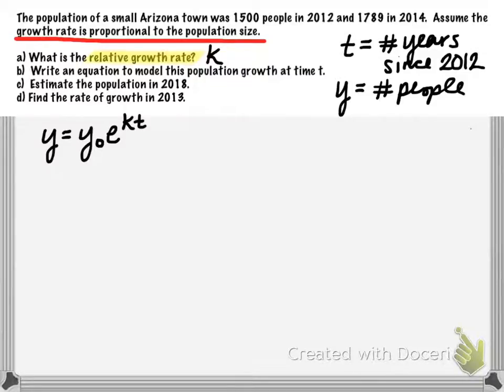I always recommend that you organize the information in the problem in a table. So we're looking at this numerically. So at time 0, that would be in the year 2012, it says there are 1,500 people. And then two years later, in the year 2014, when t equals 2, there are 1,789 people.